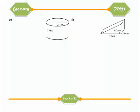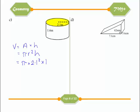Here we have a cylinder. The cross-sectional area is a circle, so rather than using a separate formula, volume is still area times height: V = πr²h. Plugging in the values — pi times 2.1 squared times 1.6 (the height) — gives approximately 22.2 metres cubed.